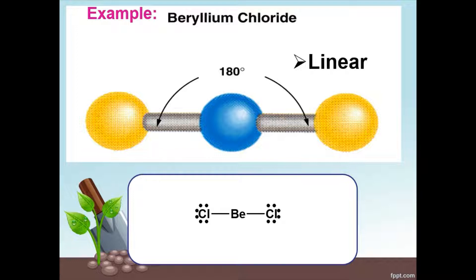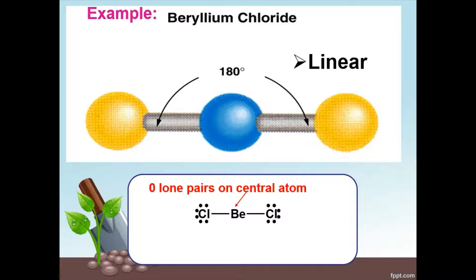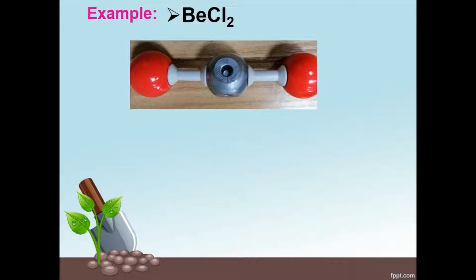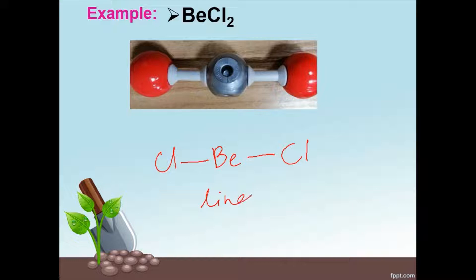Let's look at Table 5.3. The first compound is BeCl2, which is a linear compound. This compound has two chlorine atoms bonded to the central atom beryllium, and beryllium has no lone pairs. To draw BeCl2, we draw the central atom beryllium, then two straight lines representing the two bonding pairs, and then we draw the two chlorine atoms. We don't have to draw the lone pairs for terminal atoms — only for the central atom. Don't forget to write down the name of the molecular shape: linear.